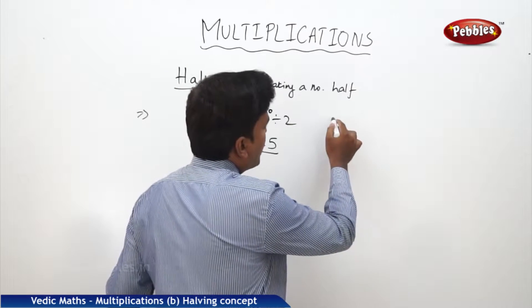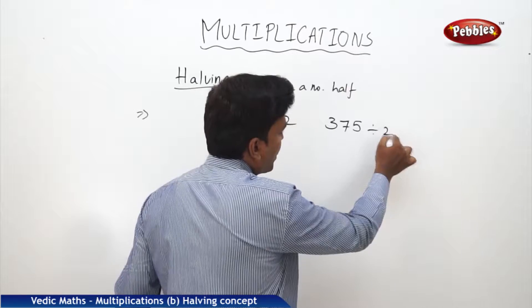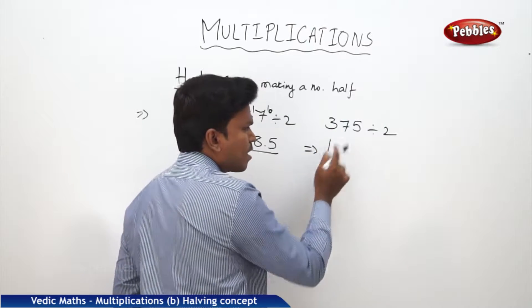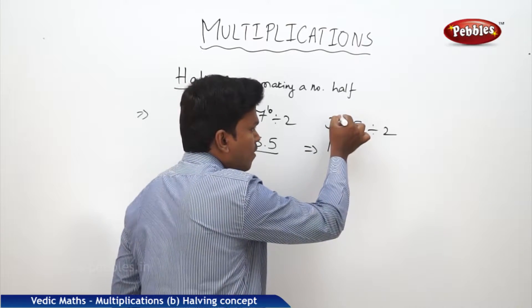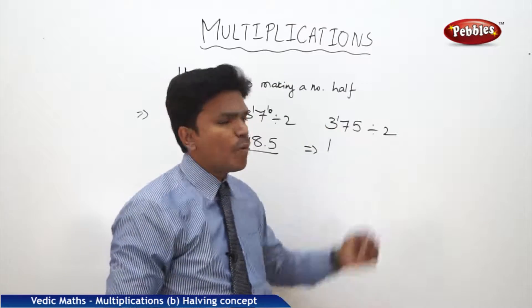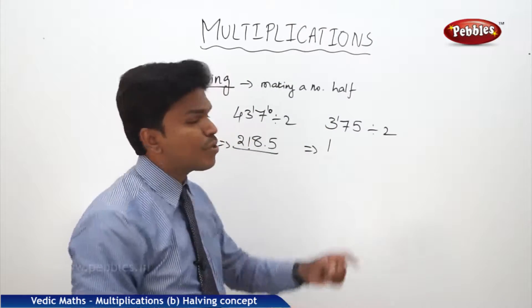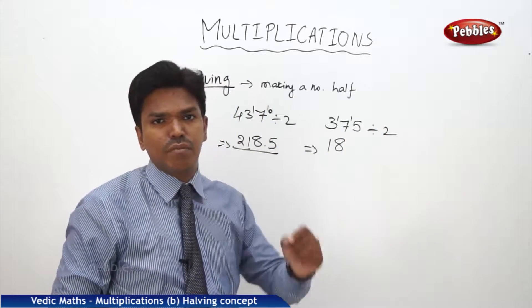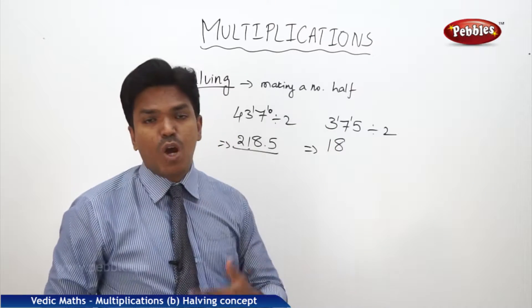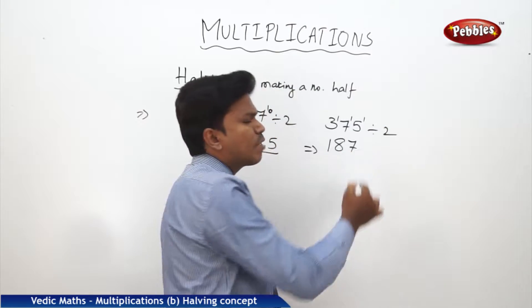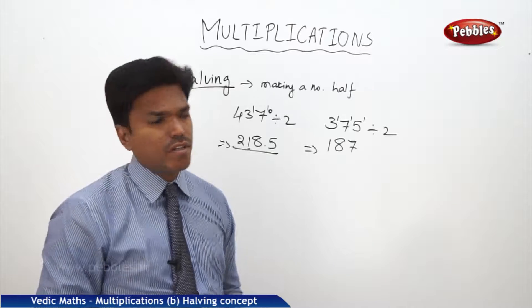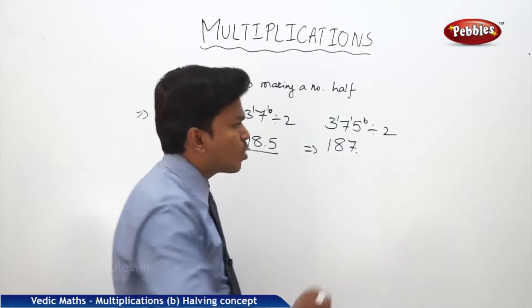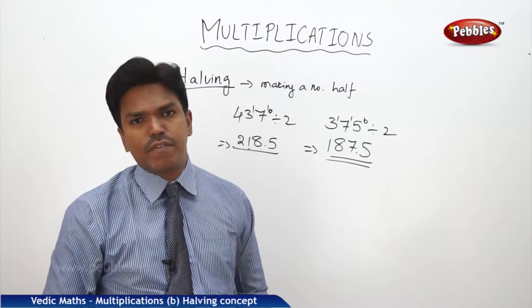One more example. If I want to divide 375 by 2: 2 goes into 3 one time, remainder 1. Put that remainder 1 before 7 to make 17. 2 goes into 17 eight times, remainder 1. Put remainder 1 before 5 to make 15. 2 goes into 15 seven times, remainder 1. Add a decimal point and a zero to get 10. 2 goes into 10 five times. So the answer is 187.5.